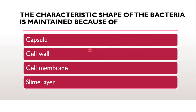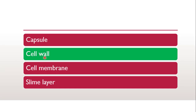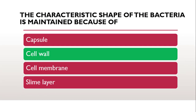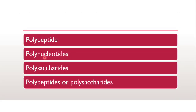Next question: the characteristic shape of bacteria is maintained because of capsule, cell wall, cell membrane, or slime layer? When a capsule is diffused, it is known as slime layer, so both options are cancelled. Capsules are secretions of the cell wall only, and the cell wall confers rigidity to the bacterial structure while the cell membrane is protected by the cell wall. So the correct answer is cell wall.